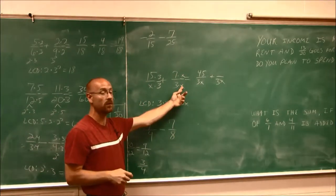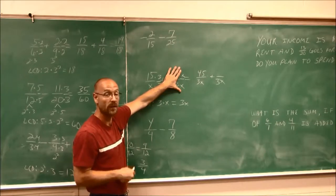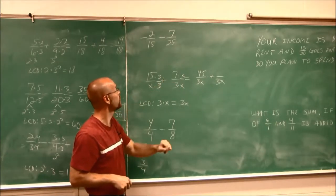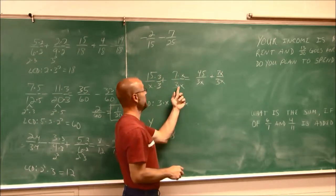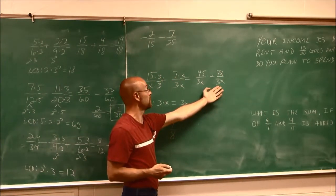And even though this is a variable, we're still multiplying by 1. x over x. Any number over itself is 1. So 7 times x is 7x, and 3 times x is that 3x we were looking for.